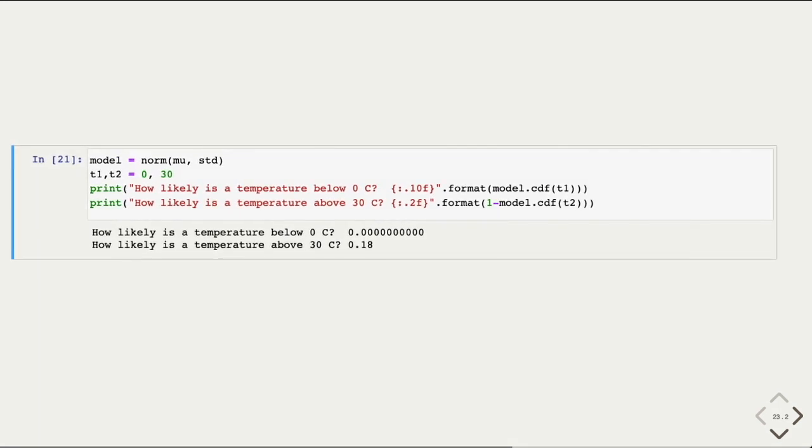So now we can plug the numbers back into the model, the normal distribution model, using the mean (mu) and the standard deviation (STD). And we now can estimate the likelihood of particular temperature values. So for example, how likely is the temperature below zero Celsius based on this distribution? So given the observed temperature data, it is extremely unlikely, based on the estimate here, that we are going to observe a temperature below zero.